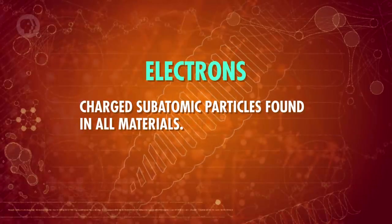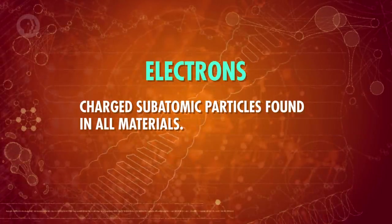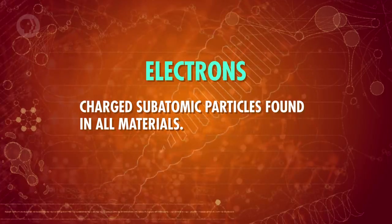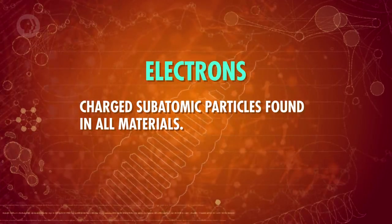Electrical power is carried in a material by the flow of electrons – charged subatomic particles found in all materials. Most electrons are bound up in atoms not doing very much, but certain materials allow electrons to flow through them, carrying charge. That flow is what we call an electrical current, and it's measured in units called amperes.